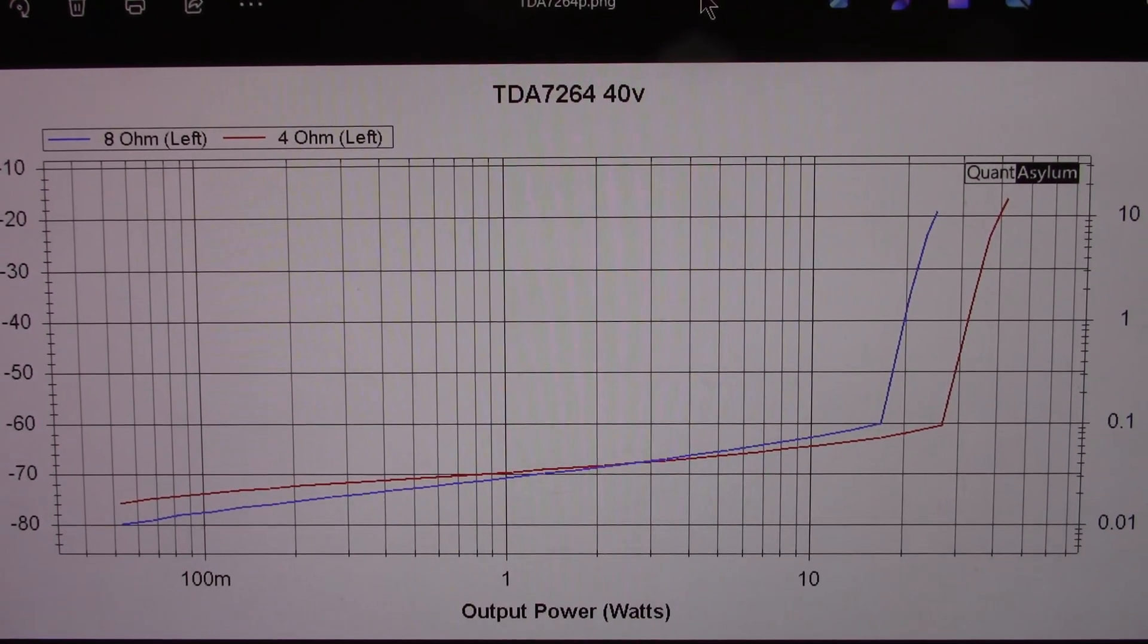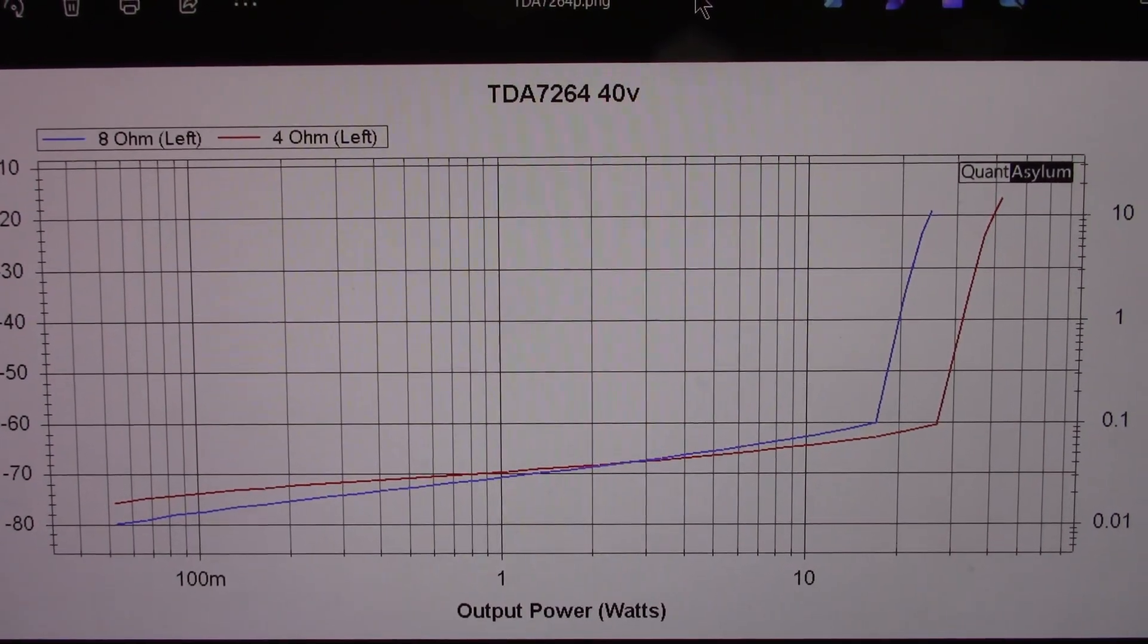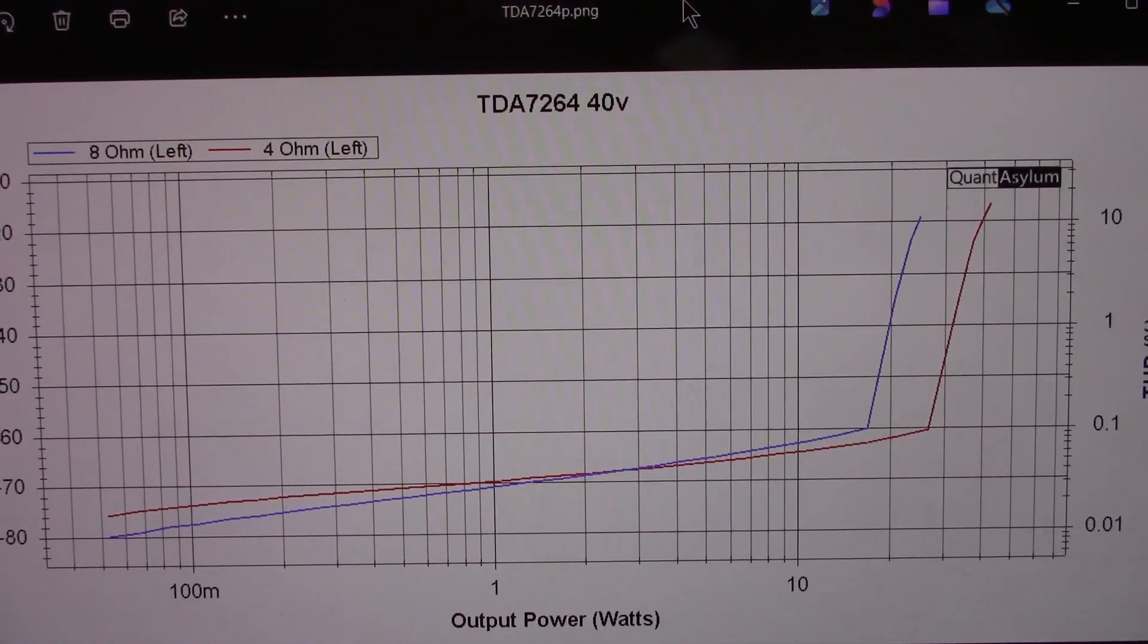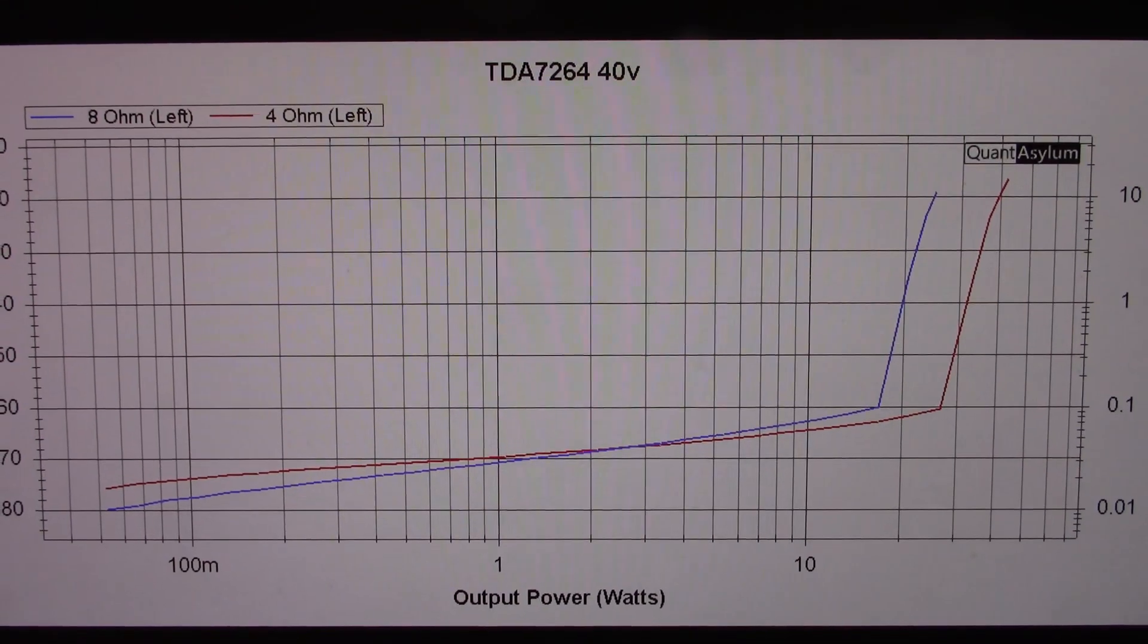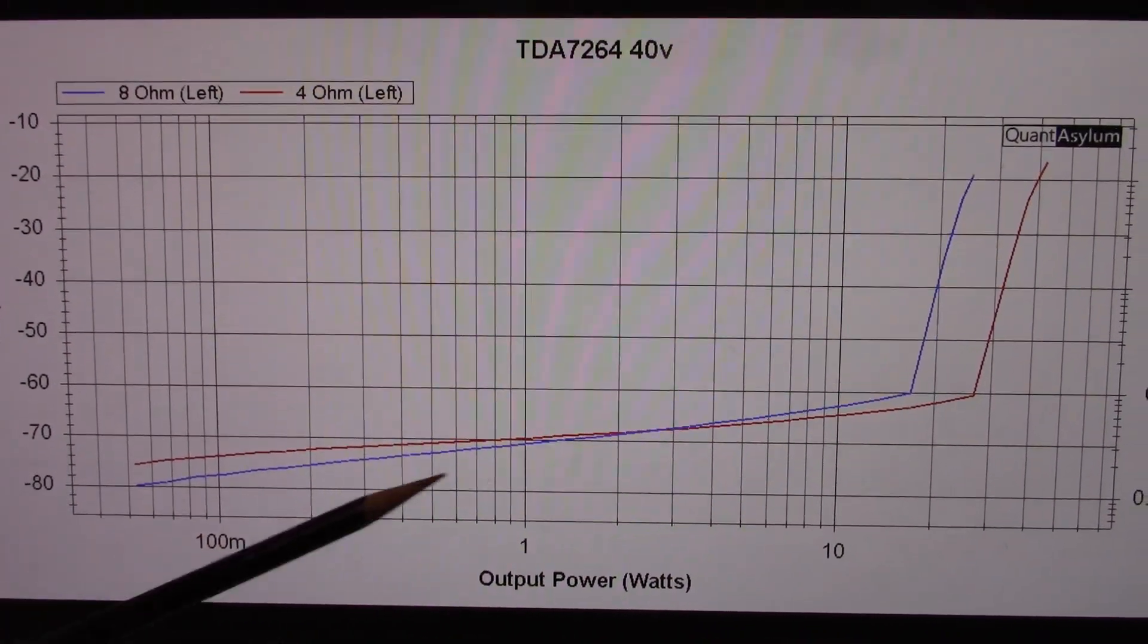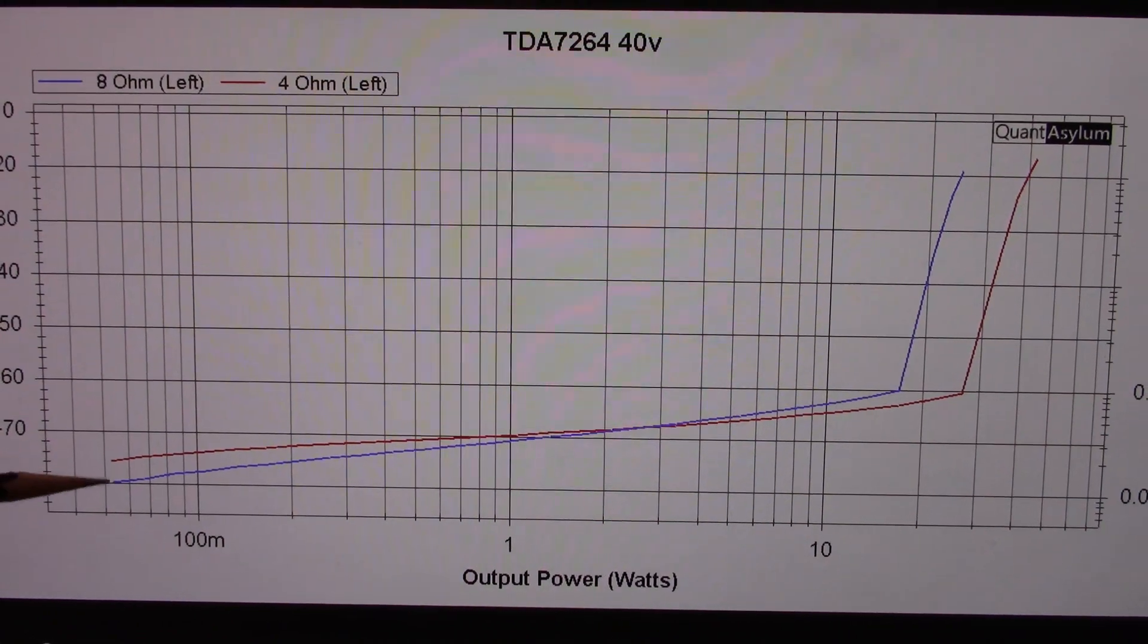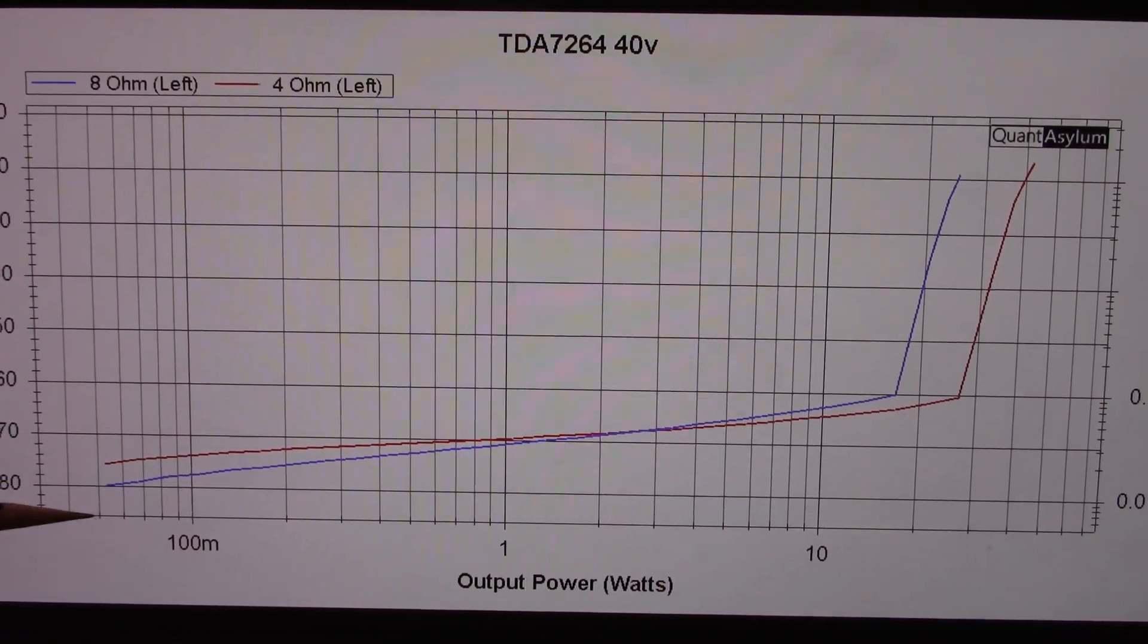You got the power versus distortion curves here. Like I said before, my personal figure of merit for an audio amplifier to be considered hi-fi is to have distortion under negative 60 dB, in other words 0.1 percent total harmonic distortion. The good news is in both cases, four and eight ohms, we are under that in the power band until we get into clipping.